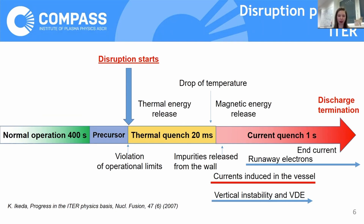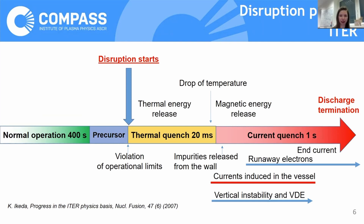This will lead to formation of magnetic islands. Then the thermal quench starts. During thermal quench, the instabilities that started during the precursor phase will rapidly grow, and the islands will overlap in radial direction. Perpendicular heat diffusivity will increase — it will be much larger than normally — and so we will lose thermal insulation. Therefore, we will suddenly lose our thermal energy.